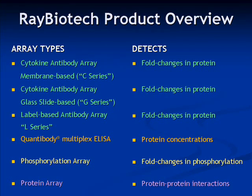Ray Biotech has developed several types of arrays to meet the needs of scientists. We will now present a brief overview of our antibody array product range. The cytokine arrays are available printed on either nitrocellulose membrane, which are known as the C-series arrays, or a glass chip, which are known as the G-series arrays.